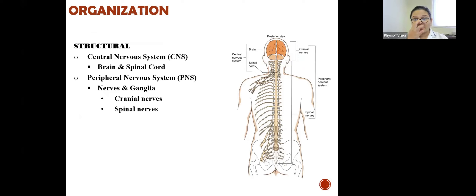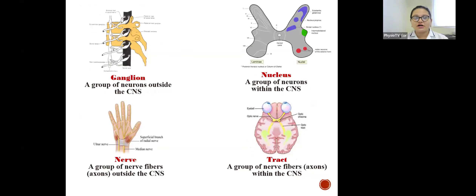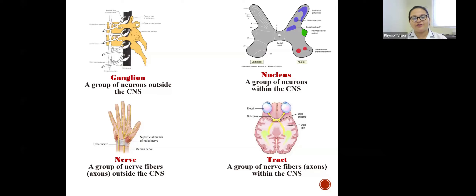Let's look at the general terminologies. A group of neurons outside of the CNS is called a ganglion, whereas the same group of neurons inside the CNS is called a nucleus. A group of nerve fibers located outside the CNS is called nerves, whereas the same group of nerve fibers within the CNS is called a tract.